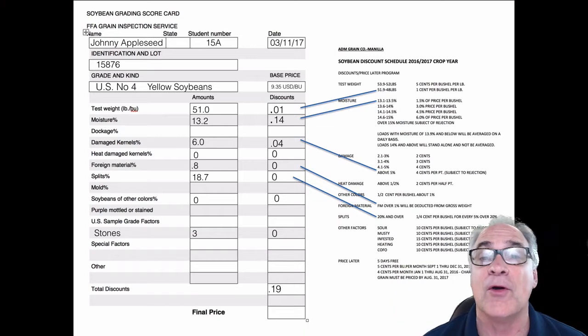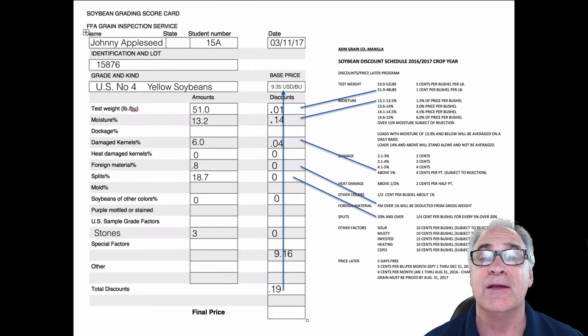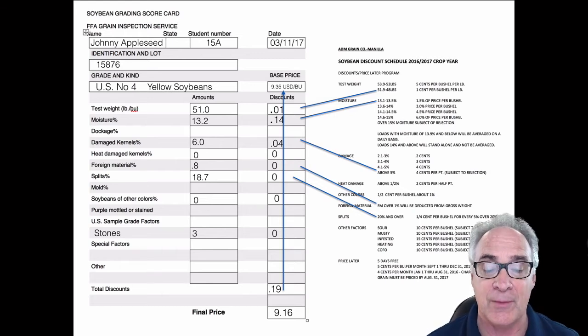So we add up all of those in that column, in the discounts column, we get 19 cents. And we take 19 cents, subtract it from $9.35 per bushel that is our market price. So the check we're going to write to the grower today is $9.16 per bushel. That's what it'll come out to be.